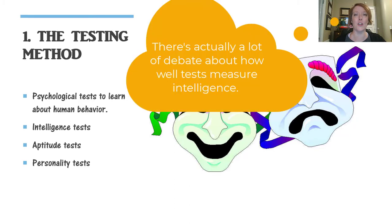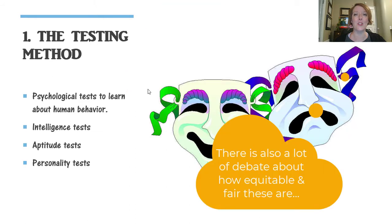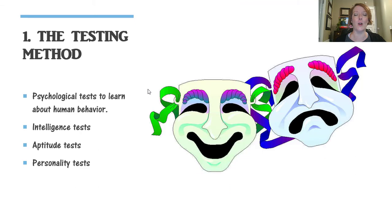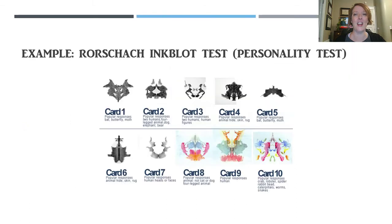Intelligence tests are designed to determine how smart someone is, and an aptitude test is designed to figure out how much knowledge someone already has about a topic. Intelligence tests could be something like a Stanford Binet test. An aptitude test would be something like the SAT, the ACT, or the ASVAB. And then we have personality tests that are very specific to psychology — an example of that would be a Rorschach inkblot test.